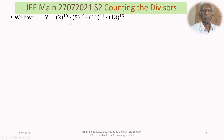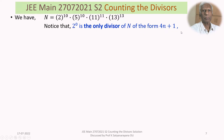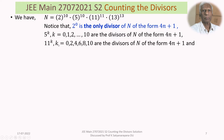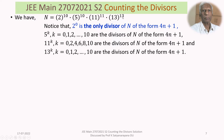Looking at the prime factorization: 2^0 is the only power of 2 that is of the form 4N+1. The powers 5^k for k = 0, 1, 2, ..., 10 are all divisors of N of the form 4N+1. For 11, only even powers 11^k for k = 0, 2, 4, 6, 8, 10 are divisors of this form. For 13, all powers 13^k for k = 0, 1, 2, ..., 13 are divisors of the form 4N+1.